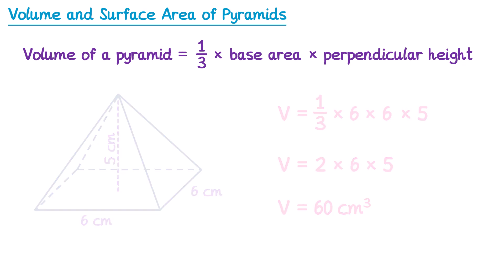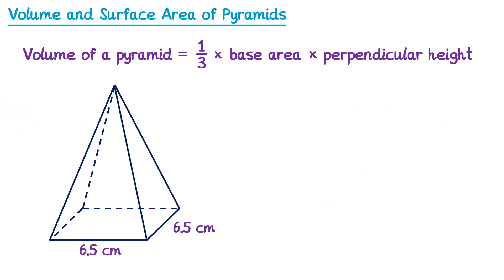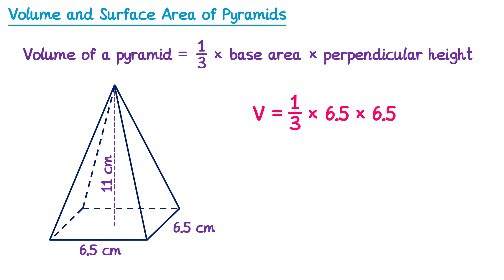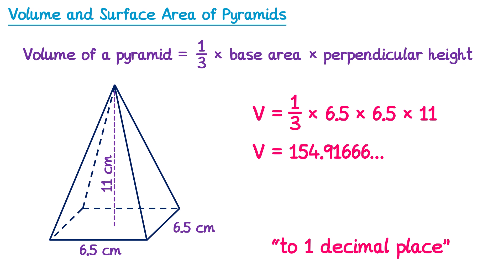Let's try a second example. For this one we have a square base once again with length 6.5, and the perpendicular height is 11. This time you would be allowed a calculator. So using the formula, the volume equals one-third multiplied by the base area — so the area of this square, 6.5 times 6.5 — and then multiplied by the perpendicular height which is 11. You would take your calculator and type this in exactly as written. That would give you this number, and if the question asks to round to one decimal place, it would be 154.9 centimetres cubed.